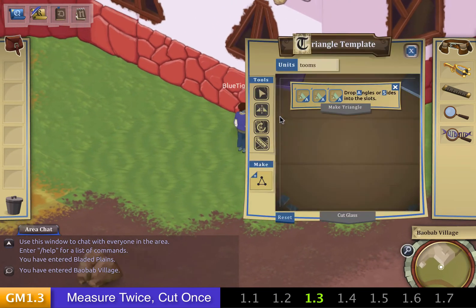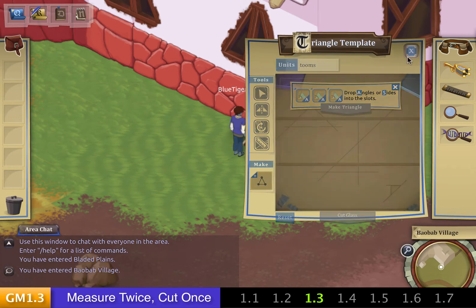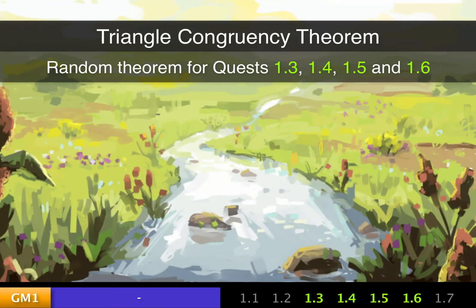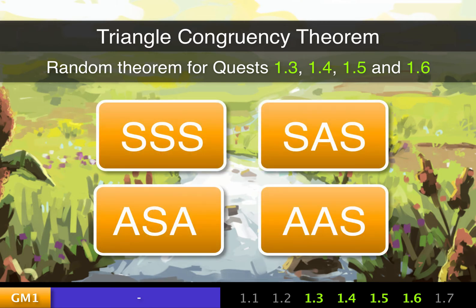Students will do this by using the Triangle Template Station tool. You can also find a tutorial on this tool on the website. The idea behind quest 1.3, as well as quests 1.4, 1.5, and 1.6, is Triangle Congruency Theorem. Each of these quests will have one theorem associated with them, chosen randomly from the list shown.